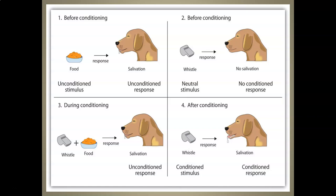What Pavlov is mostly known for is the salivating dog experiment. We'll look at this step by step. In the top left frame — before conditioning — Pavlov would present food and noticed that the dogs would automatically salivate. The food was known as the unconditioned stimulus, meaning untrained or naturally occurring, and the salivation was the unconditioned response — a naturally occurring stimulus-response pair.